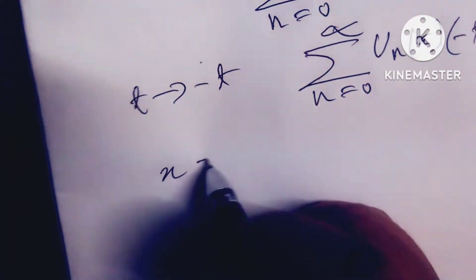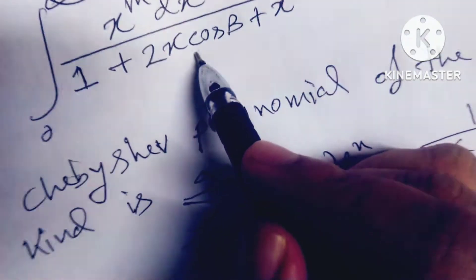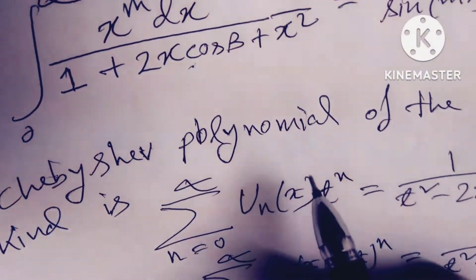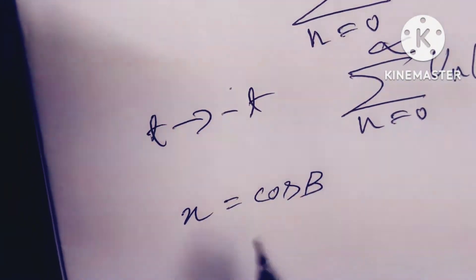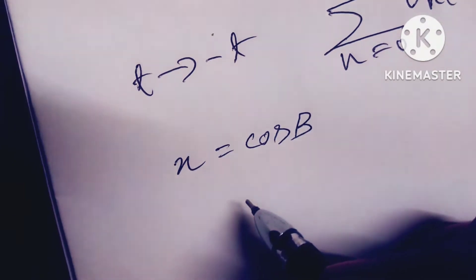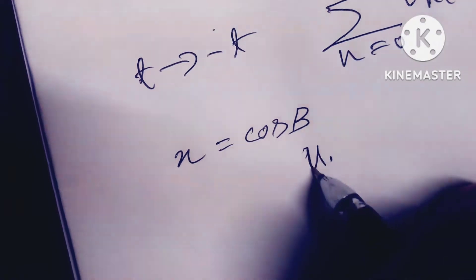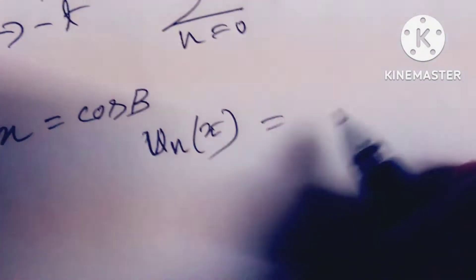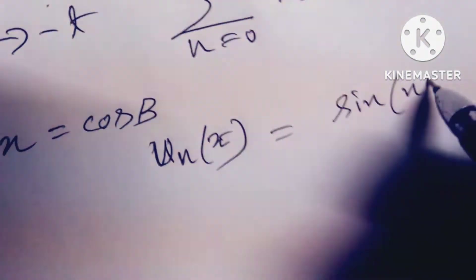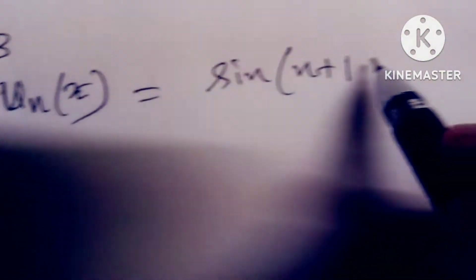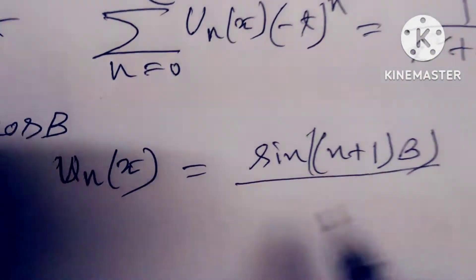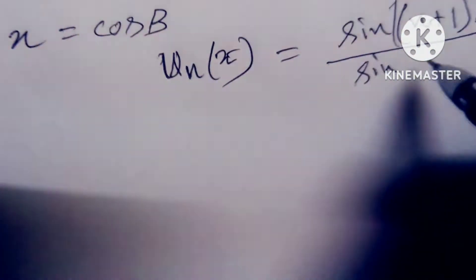After that, we substitute x = cos β, because you can see the cos β term in the denominator. With x = cos β, we find that U_n(x) equals sin((n+1)β) / sin(β).